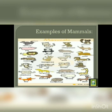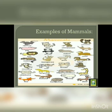Here are a few more examples of mammals. As you can see: panda, dog, monkey, elephant, fox, deer, giraffe, etc. Dear students, do you know whale and dolphin look like fish, but they are mammals.